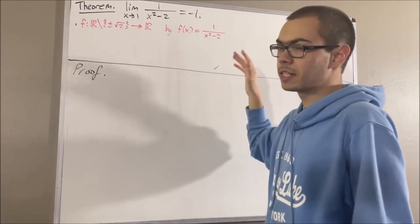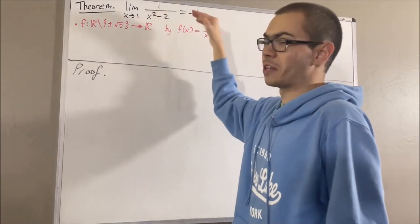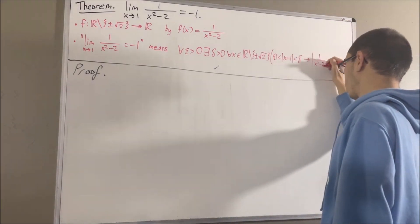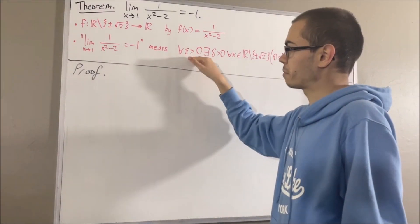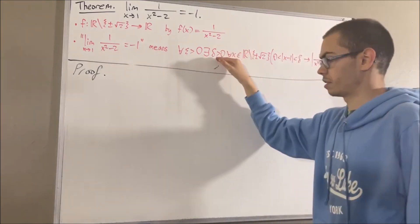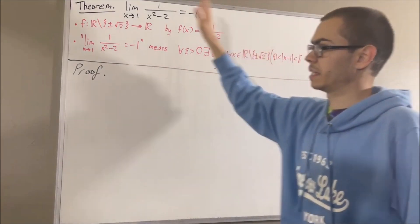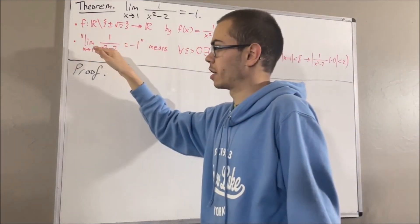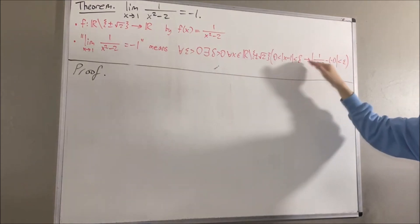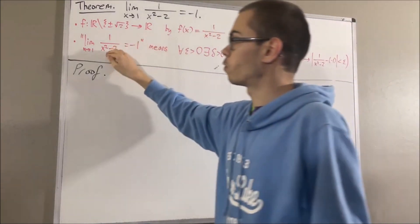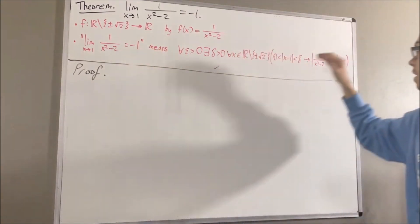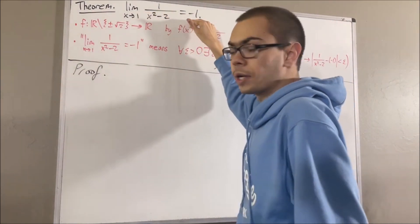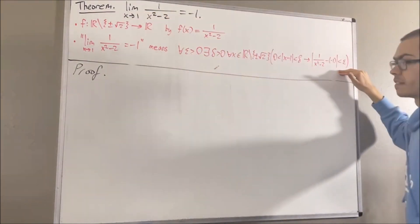By the epsilon-delta definition of a limit, this means the following: for every epsilon greater than 0, there exists a delta greater than 0 such that for all x in the domain of our function, if 0 is less than the absolute value of x minus 1 is less than delta, then the absolute value of 1 over x squared minus 2 minus negative 1 is less than epsilon. To prove this limit, all we have to do is prove this statement is true.